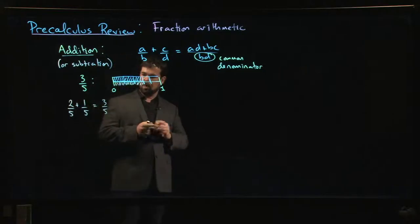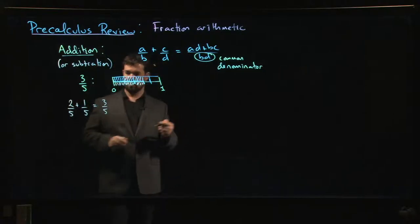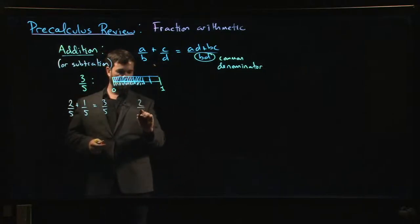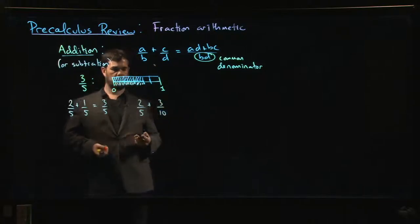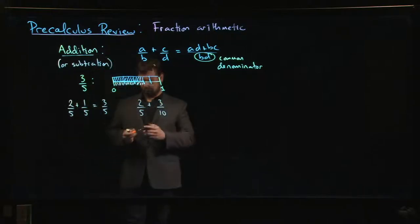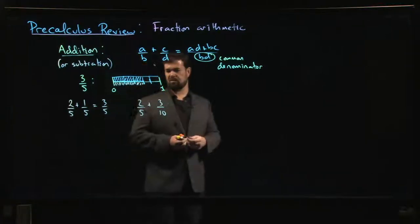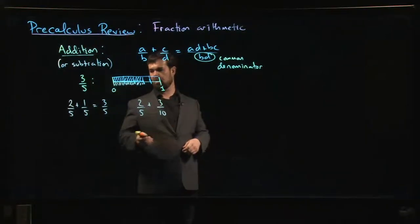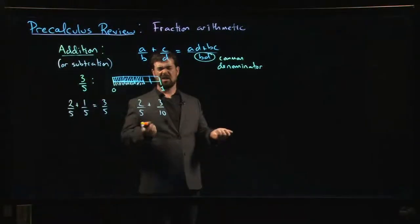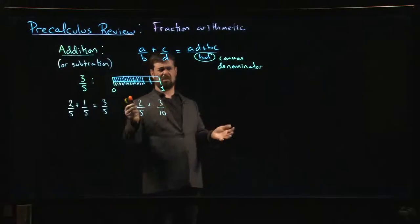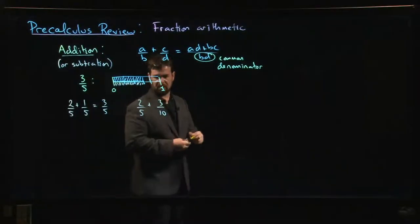Where things get more complicated is when somebody says, okay, I've got two-fifths and I want you to add, let's say, three-tenths. Now these are fractions that are different types. This is now, rather than saying okay I want you to take two apples and add one more apple, it's not quite apples and oranges.